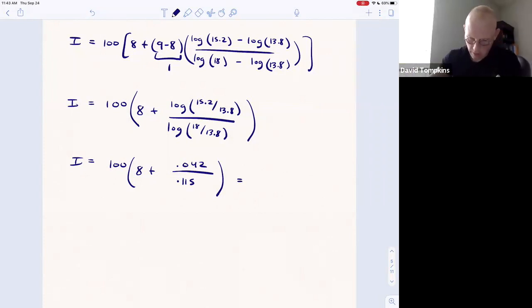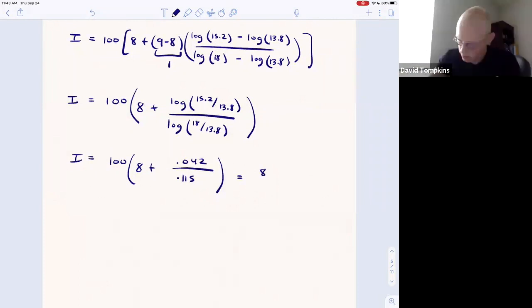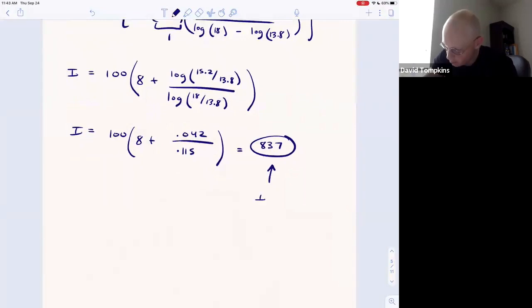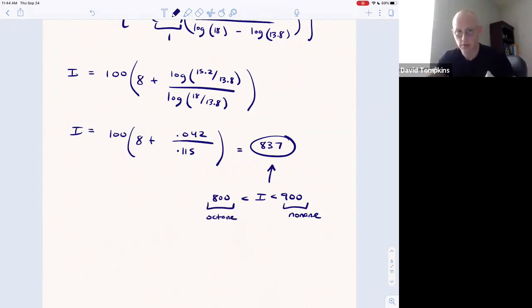I get Kovats retention index equal to 100 multiplied by 8 plus 0.042 divided by 0.115. If you multiply that through, you get a retention value of 837, which is exactly what we predicted. It falls within the range where I should be less than 900 because that was for nonane and greater than 800 for octane. So using two different retention times surrounding the peak that's unknown, you can find the exact retention index for an unknown.